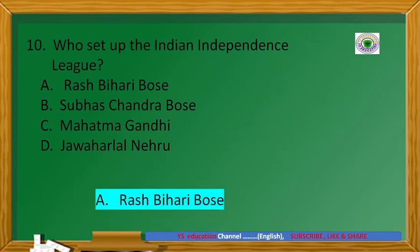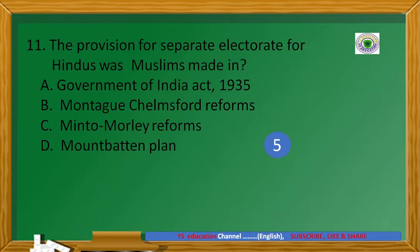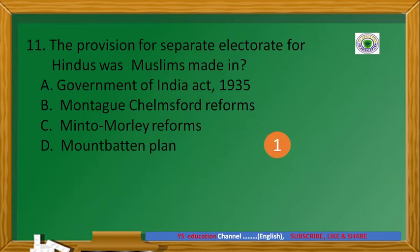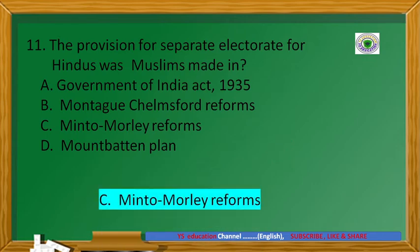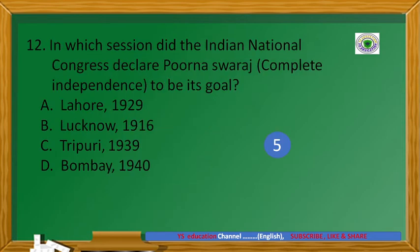The provision for separate electorate for Hindus and Muslims was made in the Morley-Minto Reforms. In which session did the Indian National Congress declare Purna Swaraj, meaning complete independence, to be its goal?